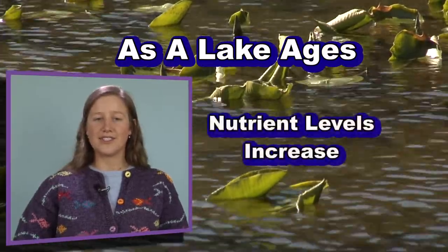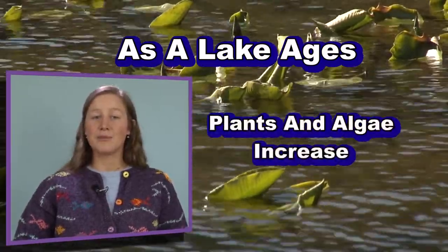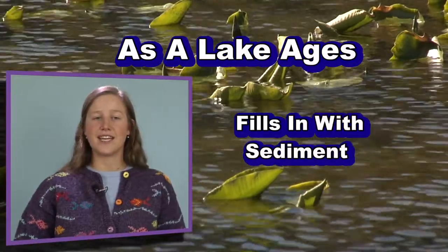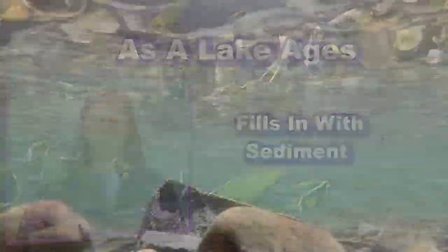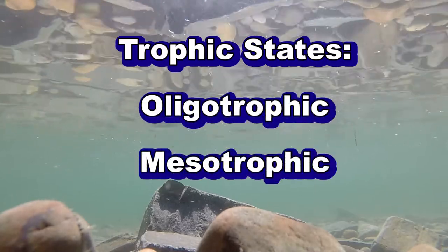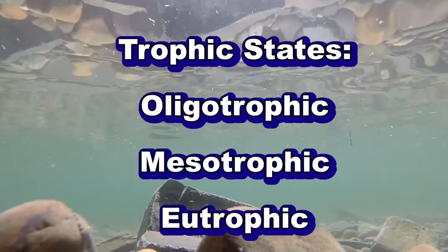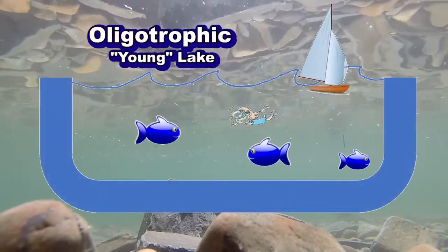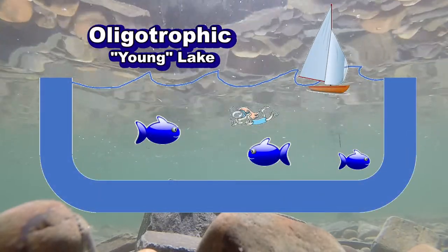As a lake ages, nutrient levels increase, plants and algae increase, and the lake fills in with sediment and other organic material, such as when these plants die and float to the bottom of the lake. The three main trophic states pertaining to lakes are oligotrophic, mesotrophic, and eutrophic. The first trophic state is correlated with a young or newly formed lake.